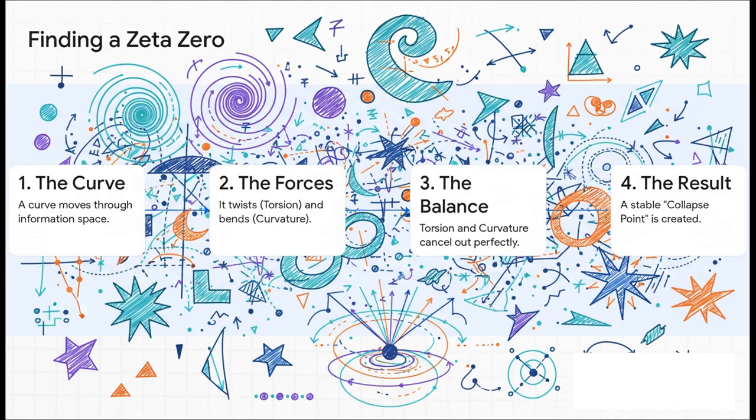Here's how it's supposed to work. Imagine a curve just traveling through this abstract information space. As it moves, it's being pulled in two different directions at once. Torsion is trying to twist it, and curvature is trying to bend it. Most of the time they're fighting each other. But—and this is the key—the theory says that at very specific, absolutely perfect points, the twist and the bend come into perfect balance. They completely cancel each other out, creating this moment of pure stability, and they call that a collapse point.